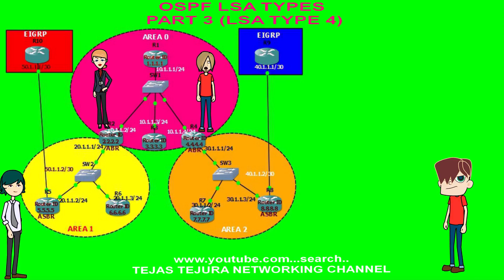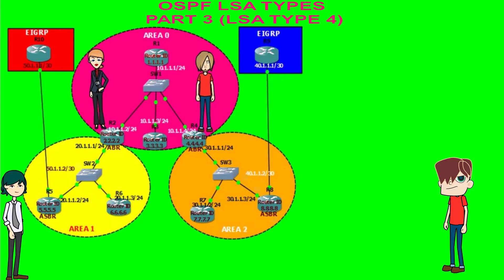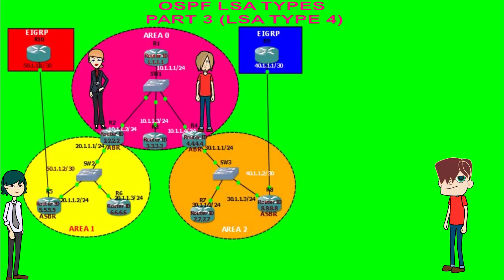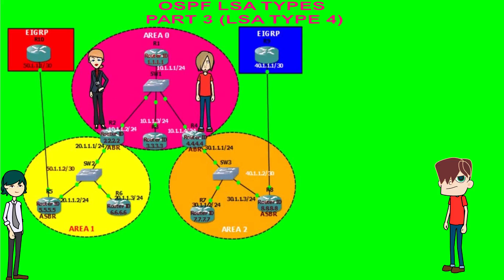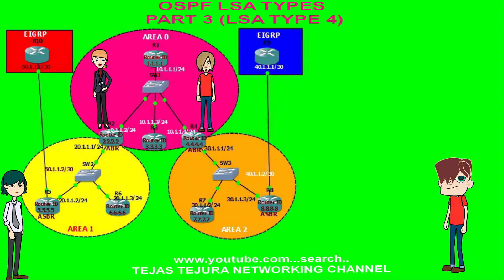I will update the ASBR information in my router area 0 and forward the ASBR router ID to other area border routers. I received the LSA type 4 from router ID 4.4.4.4. I will update that in my router area 0 and area 1. I am an area border router and in my connected area there is one ASBR with router ID 5.5.5.5. I will update the ASBR information in my router area 0 and forward that to other area border routers.